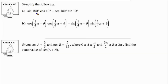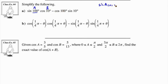Class example number 4 asks us to simplify: sine of 100 degrees times cos of 10 degrees minus cos of 100 degrees times sine of 10 degrees. At first glance it may look confusing, but we can notice the pattern: sine of an angle times cos of a different angle, minus cos of the first angle times sine of the second angle. If we let a equal 100 and b equal 10, this matches the pattern sine(a)cos(b) minus cos(a)sine(b), which equals sine of a minus b.